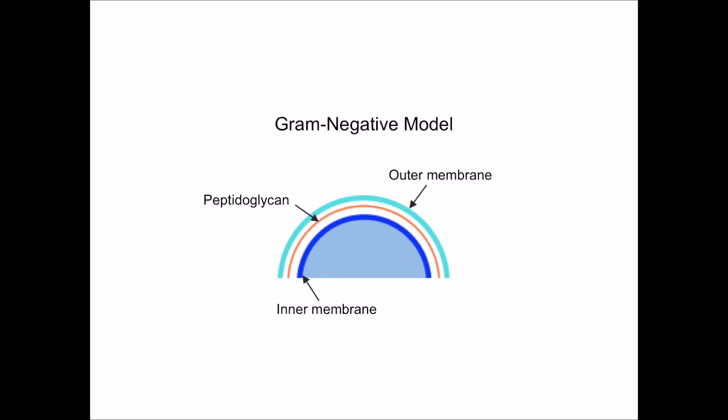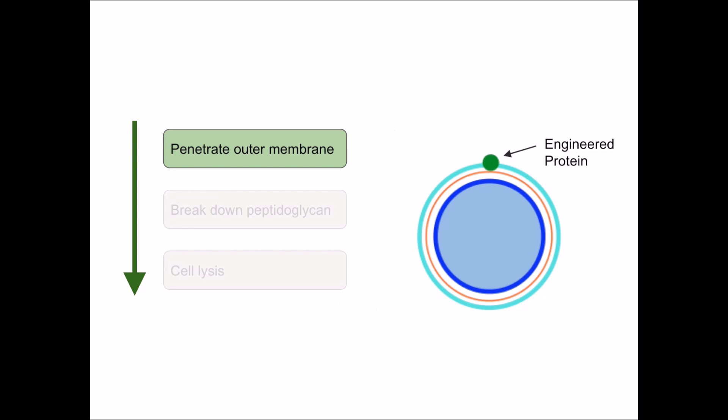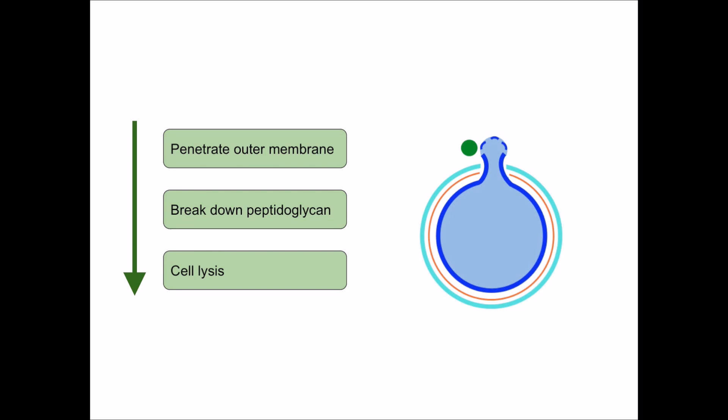Here is a structure of the gram-negative bacterial cell wall. This arrangement reduces the efficacy of many antibiotics due to the difficulty in penetrating the outer membrane. However, we have engineered our protein to first penetrate the outer membrane. Then, the protein breaks down the peptidoglycan layer, which results in cell lysis due to the high internal osmotic pressure of the bacteria.